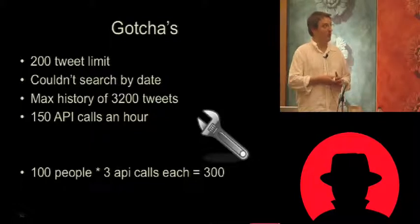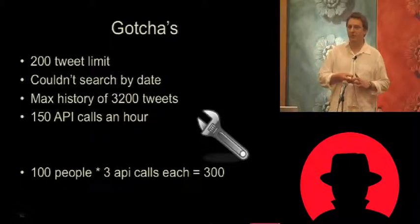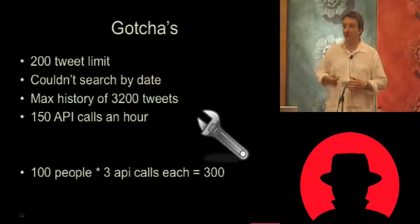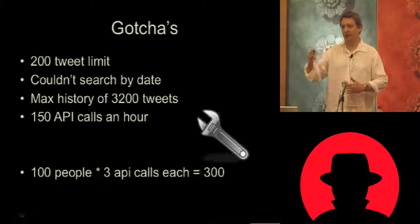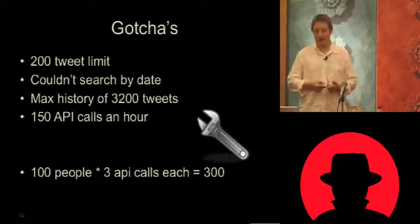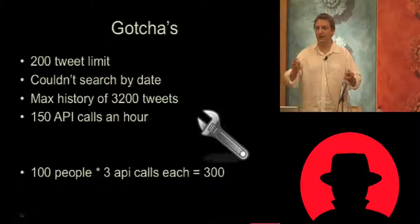There are a couple more gotchas. You've got a 200-tweet limit — when you run the API call, you'll get 200 tweets back. So if you want to look at 400 tweets, for example, that's two API calls. That was an issue — you couldn't search by date, so I couldn't say I want all tweets between these dates.